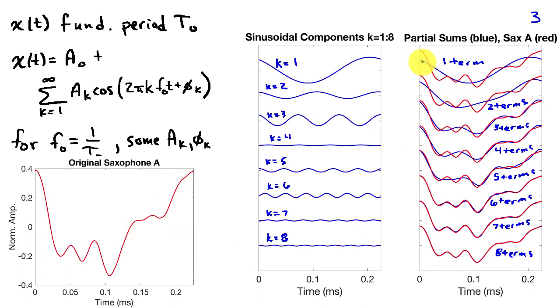I've got the individual sinusoids that are used to make up this saxophone note. And then on the right-hand side, I'm showing what happens when you use one sinusoid, when you use the first two sinusoids, three, and so on, all the way up to eight sinusoids.